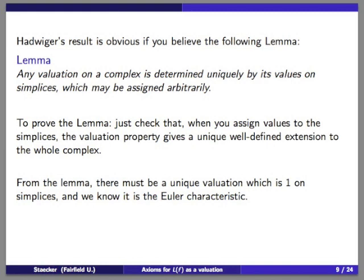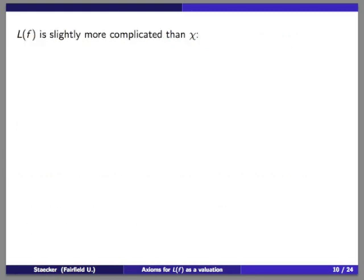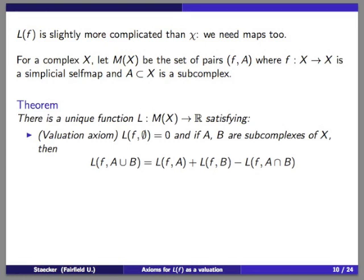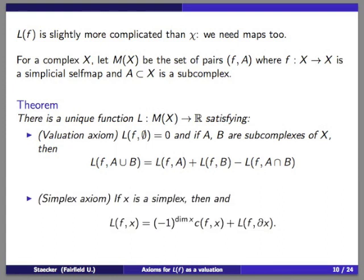The Lefschetz number is more complicated than the Euler characteristic because we need to talk about maps, not just complexes and their subcomplexes. Our domain: specify a complex, and let M(X) be the set of pairs of a map and a subcomplex. Our invariant is defined on this set. The theorem states there is a unique function from M(X) satisfying the valuation property and a simplex axiom — a normalization property — which is more complicated than the one used for the Euler characteristic.